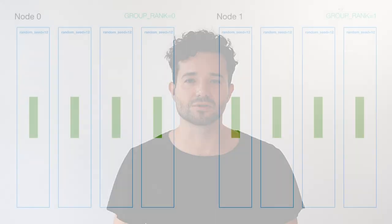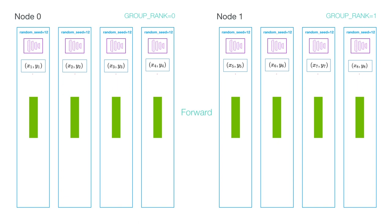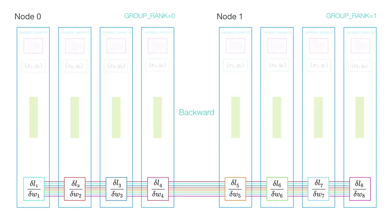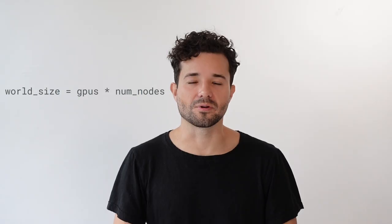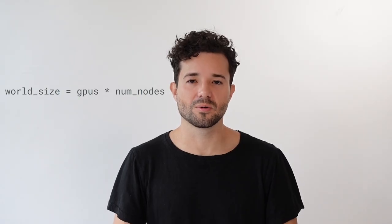Here's a quick summary of DDP. Every single GPU across every machine will get a copy of the model and a subset of the data. In our example, we're going to get 1/64th of our dataset allocated to each GPU, and that GPU will only ever see that 1/64th. The model will train through a forward and backward pass, and then it will sync the gradients across all the GPUs in the world. In our example, the world size equals 64, which is the number of GPUs times the number of nodes.